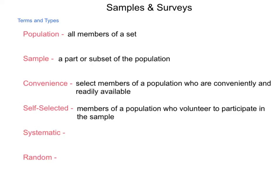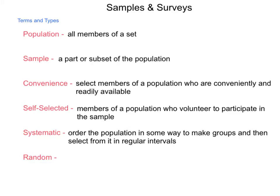Next up is a systematic sample. You order the population in some way to make groups and then select from those groups at regular intervals. This is how polling is done on election night — representatives are sent to every polling station, and pollsters ask every seventh person who completes their voting. They consider this a good cross-section of the population that can give fairly accurate results. Whenever you're taking a sample, you need to make sure that you have equal representation that reflects the population as a whole.